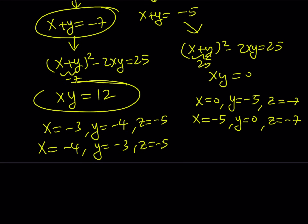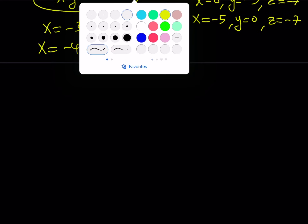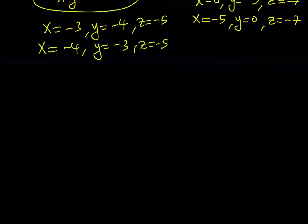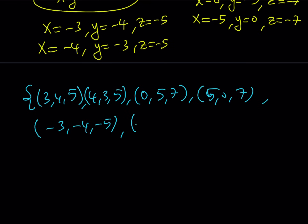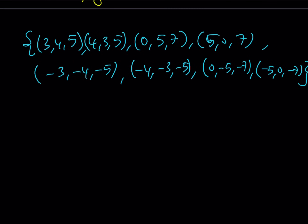Those are all the real cases. Here is the complete solution set as ordered triples: (3, 4, 5), (4, 3, 5), (0, 5, 7), (5, 0, 7), (negative 3, negative 4, negative 5), (negative 4, negative 3, negative 5), (0, negative 5, negative 7), and (negative 5, 0, negative 7). Whether there are complex solutions is left as something to explore.